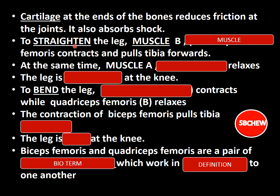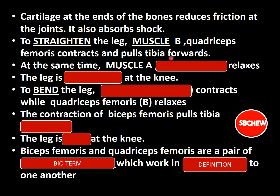Now discuss the bending and straightening of the leg using the diagrams. The first diagram shows the leg straightened. Referring to it: to straighten the leg, muscle B — which is the quadriceps femoris at the front of the thigh — contracts to pull the tibia forward so the leg is in a straight position. At the same time, the biceps femoris (the muscle at the back) relaxes. The leg is straightened at the knee.